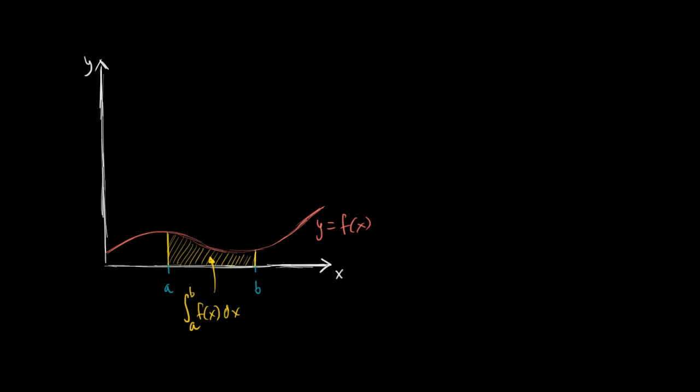We've already seen, and you're probably getting tired of me pointing it out repeatedly, that this yellow area right over here, this area under the curve y equals f of x and above the x-axis, between x equals a and x equals b, that we can denote this area as a definite integral from a to b of f of x dx.